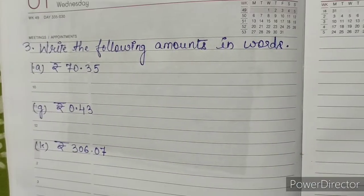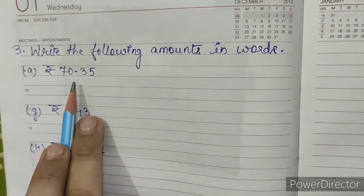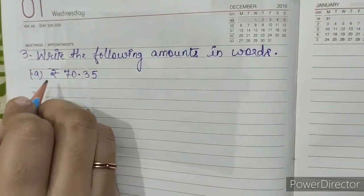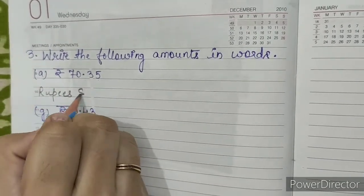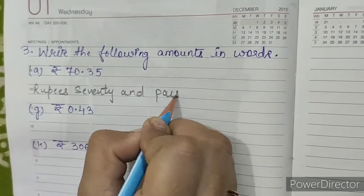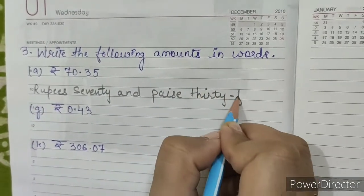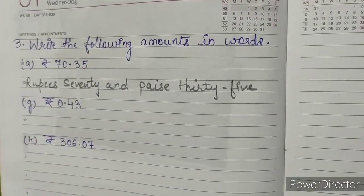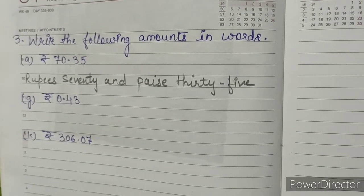Question number 3: write the following amounts in words. A. Rupees 70.35 — we'll write as rupees seventy and paise thirty-five. G. Rupees 0.43 — we'll write and read it as paise forty-three.